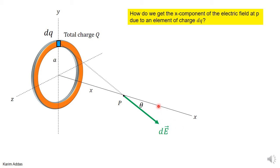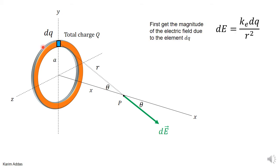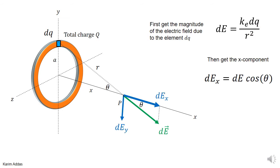How do we get the x-component of the electric field due to an element of charge dq? First, the magnitude of the electric field due to dq: if the distance is r, then dE = ke·dq / r². Since we only want the x-component, dEx = dE·cosθ. We decompose the vector into the x-component only, giving dEx = dE·cosθ.